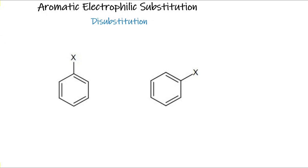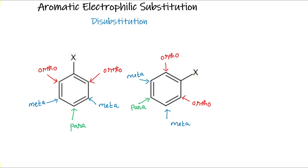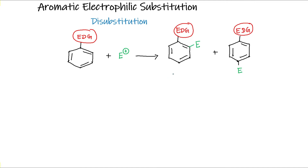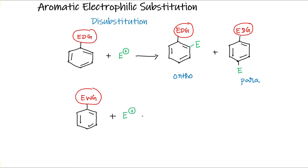If you take a mono-substituted benzene ring, the remaining 5 hydrogens are not equivalent. The positions adjacent to the already substituted group are called ortho-positions, the alternate positions are called meta-positions, and the directly opposite position is called the para-position. When the benzene ring has electron-donating groups, treating it with an electrophile causes the electron-donating group to direct the incoming electrophile towards the ortho- and para-positions. If the benzene ring has electron-withdrawing groups, it directs the incoming electrophile towards the meta-position.